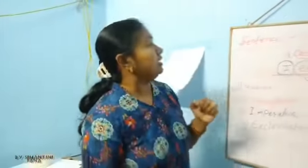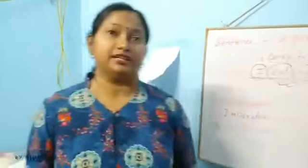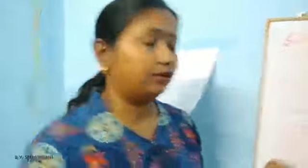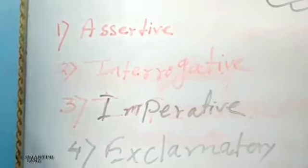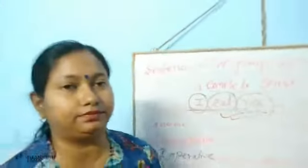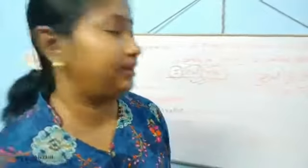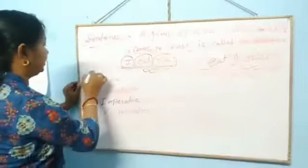We can get four types of sentences: assertive, interrogative, imperative, and exclamatory. Today I am going to finish my lesson here. Tomorrow I will explain about the types of sentences in detail. Thank you, bye.